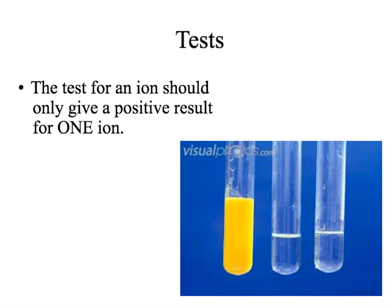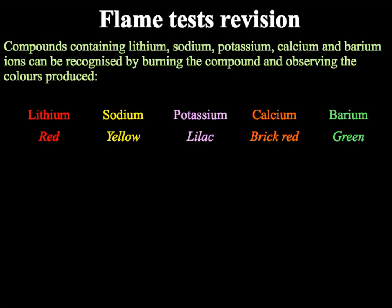We will be looking at the metal ions first that we can identify via flame test. Most metals can be found using different flame tests, where a small amount of the sample is placed in a flame and the colour change of the flame is noted. Here we have the results for the five most common flame test results: lithium goes red, sodium burns with a yellow flame, potassium is lilac, calcium is brick red, and barium is green. It is important to note that copper is also a green colour, however it is a far darker green than barium.